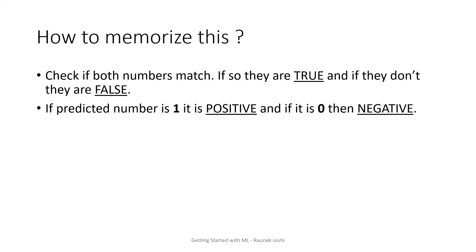How to memorize this? Many people find this confusing. I'll give you two thumb rules. First: check if both numbers match — if so, they are true; if they don't, they are false. Second thumb rule: if the predicted number is 1, it is positive; and if it is 0, it is negative. These two lines alone won't give you the entire picture, so let's walk through an example.